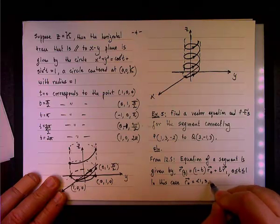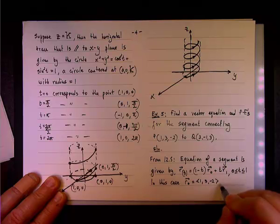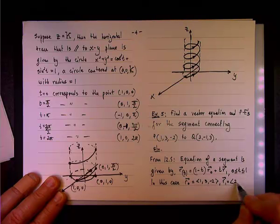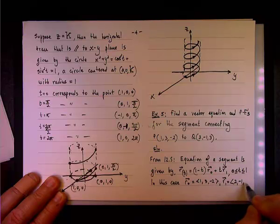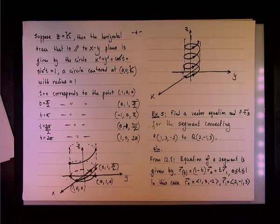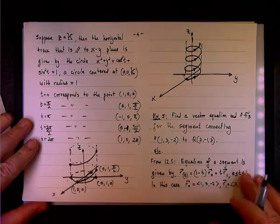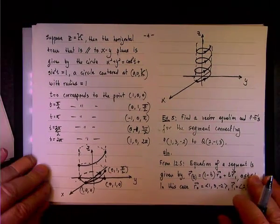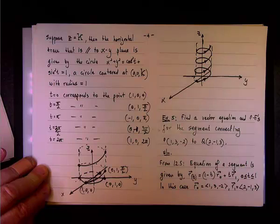R0 will be the position vector corresponding to P, so it will be the vector 1, 3, negative 2, and R1, of course, will be the position vector corresponding to Q, or 2, negative 1 and 3. And we can continue to work on the next page.